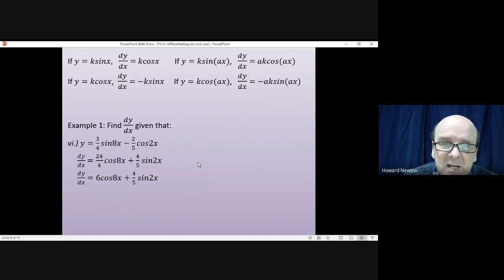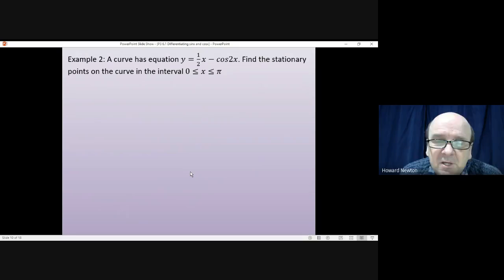OK, slightly trickier. Example two. A curve has got equation y equals x/2 minus the cosine of 2x. Find the stationary points on the curve in the interval where x is between 0 and π. Now stationary points, that's where the gradient equals 0, or dy/dx equals 0. I'll let you have a go at this yourself first, so pause the video, have a go, and then come back when you're ready.